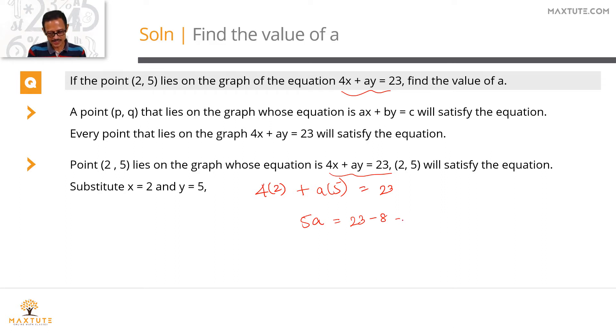23 minus 8 is 15. 5a equals 15 which means that a is equal to 15 upon 5 which is equal to 3. So value of a is equal to 3. So the equation that we are talking about is basically 4x plus 3y is equal to 23.